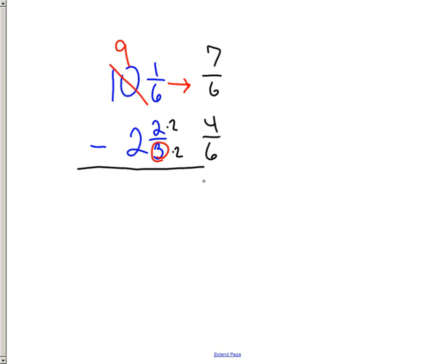So, 7 minus 4 is 3 over 6. 9 minus 2 is 7. And we're not done simplifying yet. 3 6ths would simplify down to 1 half.